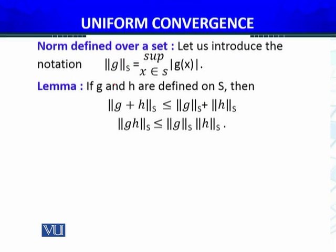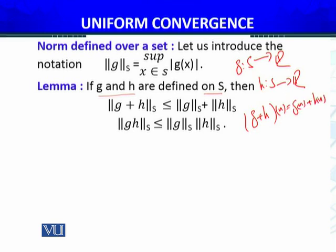If this norm is defined this way, it has certain properties stated in this lemma: If g and h are defined on the same set S, meaning both g and h have domain S with codomain the set of real numbers, then ||g + h||_s ≤ ||g||_s + ||h||_s and ||gh||_s ≤ ||g||_s ||h||_s.